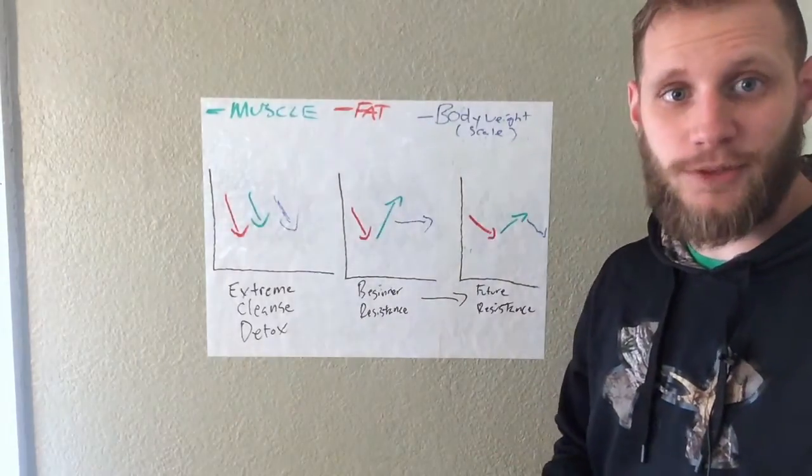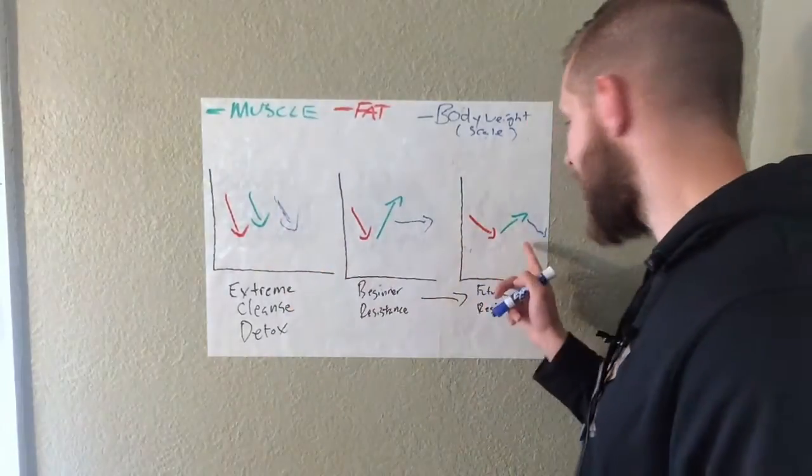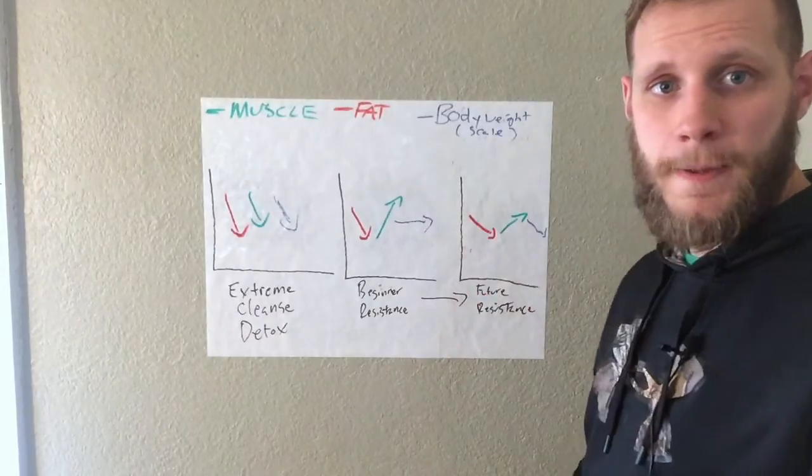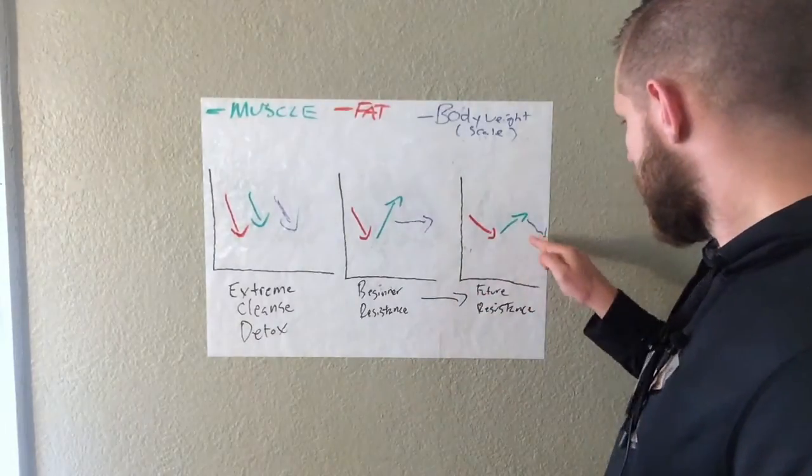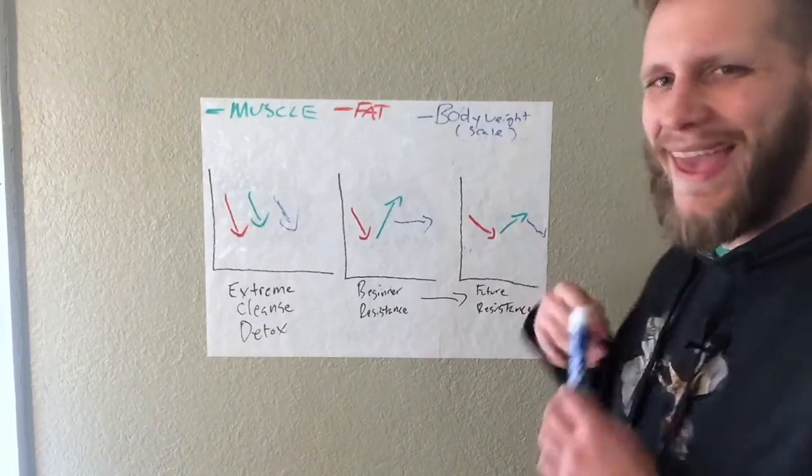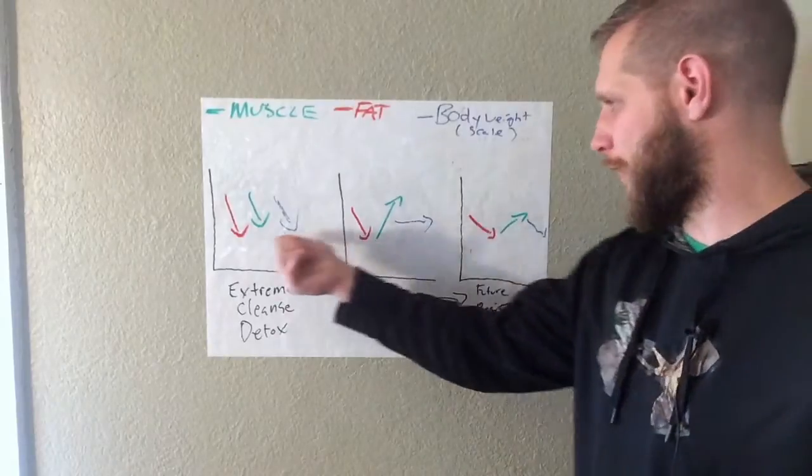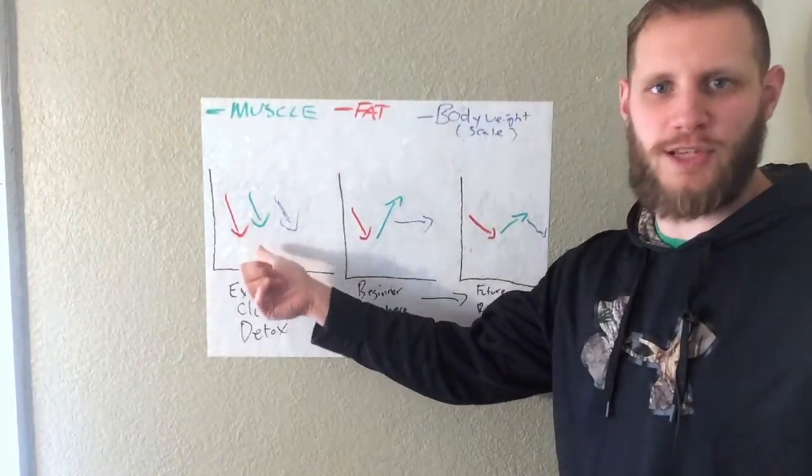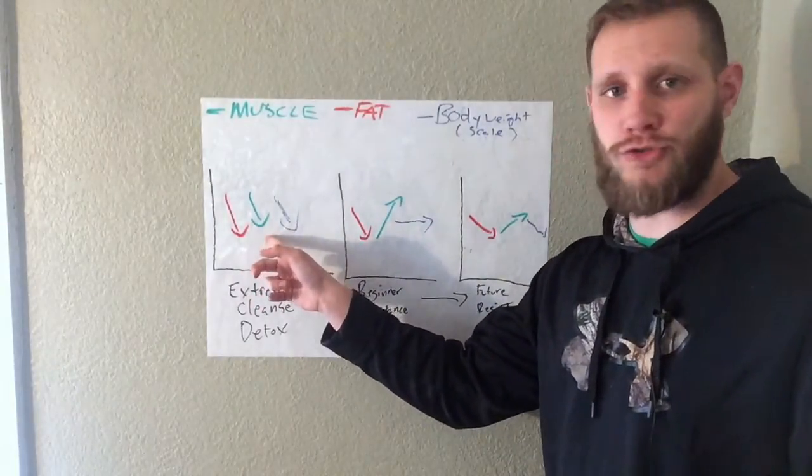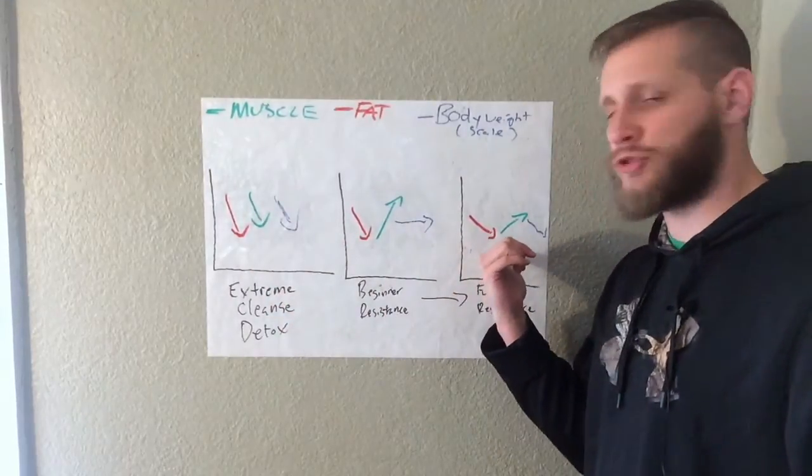Body weight is going to decrease. It may not be as rapid as here. It may be half a pound a week, a pound a week. But this is going to lead to a healthy. And your nutrition for this versus the first scenario is going to be vastly different. Here you're drinking lemon juice and a mixed powder and maybe a salad. And here you're sustaining a normal diet.